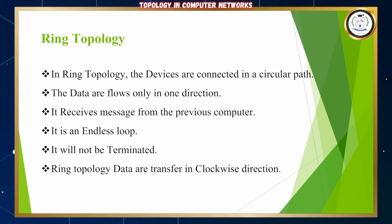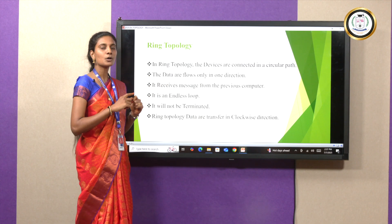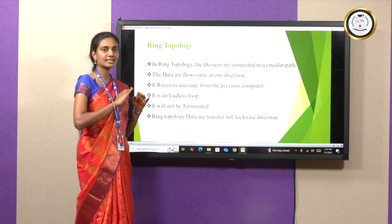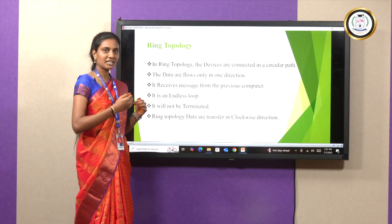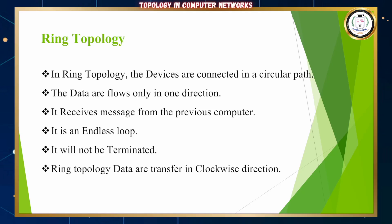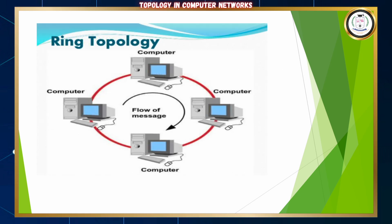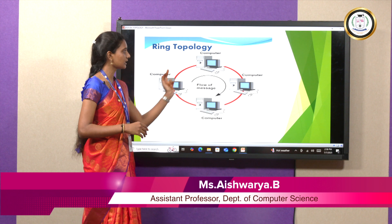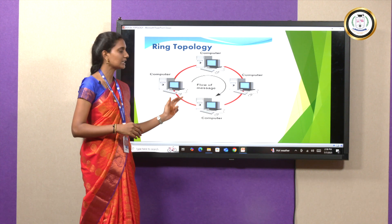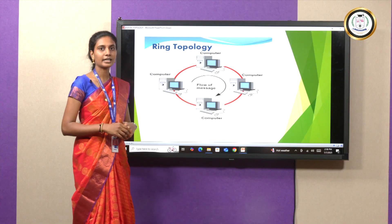The next one is ring topology. In ring topology, the devices are connected in a circular path. The data flows only in one direction — clockwise, not anti-clockwise. Each device receives a message from the previous device; it is an endless loop. In the diagram, four devices are connected in a circular path. When the first device sends a message to the second device, it passes to the third, fourth, and the process keeps repeating. This is the endless process called ring topology.